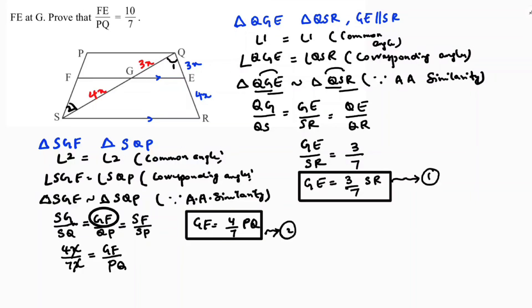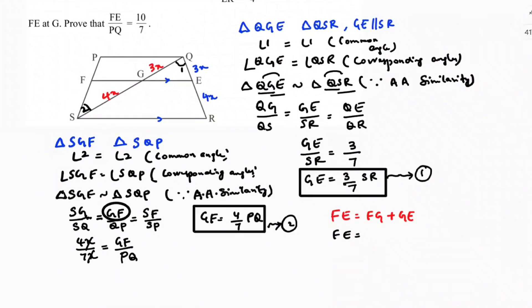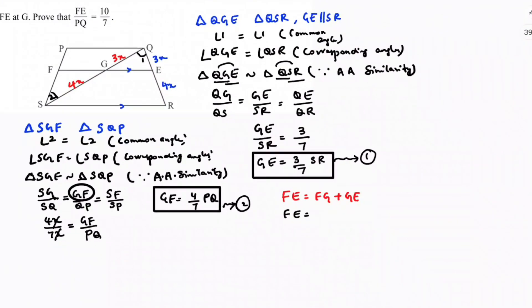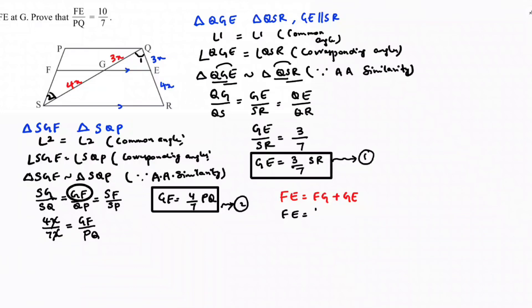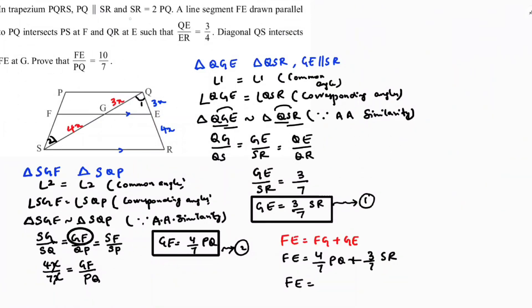Now I need FE, which is nothing but FG plus GE. So FE equals FG plus GE. FG from equation 2 is 4 by 7 PQ, and GE from equation 1 is 3 by 7 SR. In the question it is clearly given that SR is 2 times PQ.